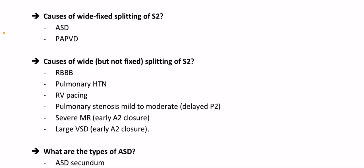Causes of wide fixed splitting of the second heart sound: ASD and partial anomalous pulmonary venous drainage (PAPVD). Causes of wide but not fixed splitting of the second heart sound: RBBB, pulmonary hypertension, RV pacing, pulmonary stenosis (mild to moderate, delayed P2), cardiac vascular resistance changes, mitral regurgitation with early aortic closure, and large VSD with early aortic closure.